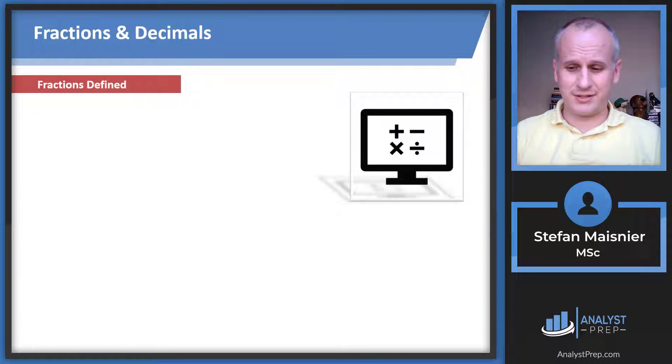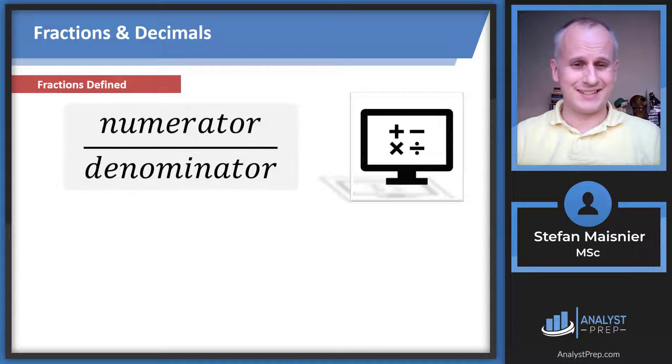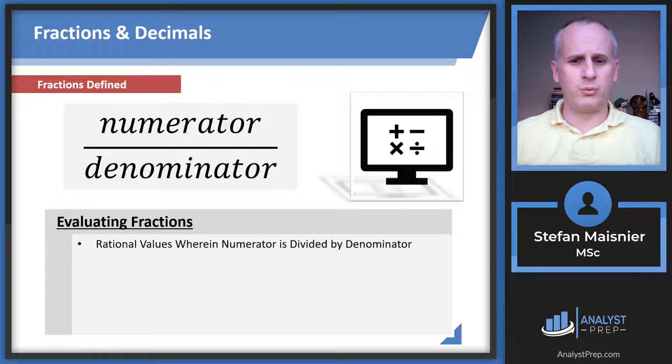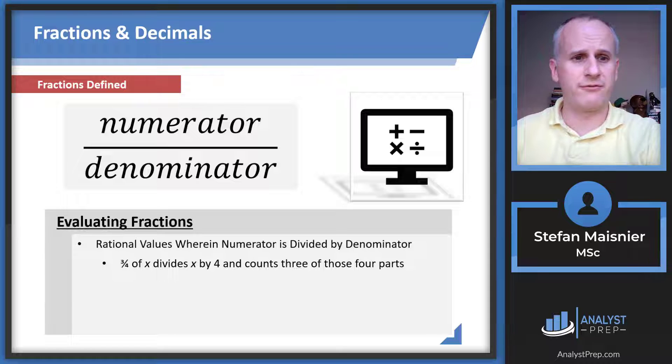Let's start by defining what a fraction is. That's a numerator over a denominator. To evaluate fractions, you're basically looking at a rational value wherein the numerator is being divided by the denominator. A rational value technically means something that can be expressed as a fraction. For instance, three quarters of X means that you're dividing X by four and counting three of those parts.